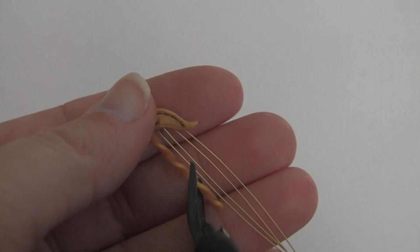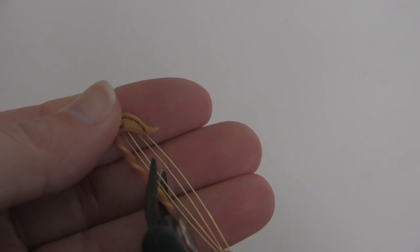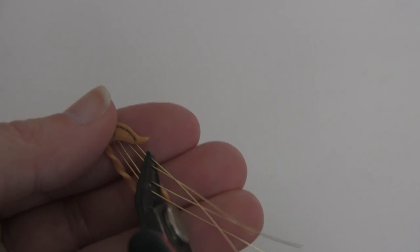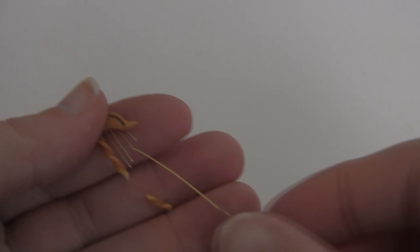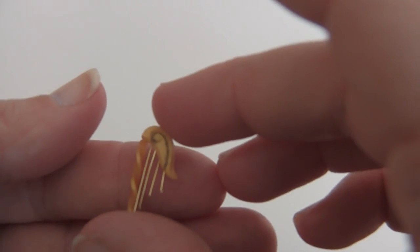So here we are. And you decide on the angle you want your harp. And you cut your strings and the excess clay with wire cutters. So that would be the shape.